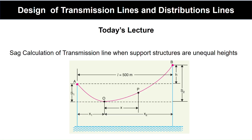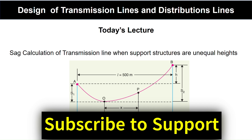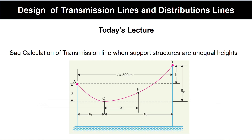Coming to today's lecture: today's topic is the sag of a transmission line when supporting structures are at unequal heights. As shown in the figure, structure A and structure B are at unequal heights. We will calculate the sag of a transmission line for this condition. In the previous lecture — lecture number 15 — we learned how to calculate the sag and how to find the tension on the conductor. Today, we will solve a worked example.